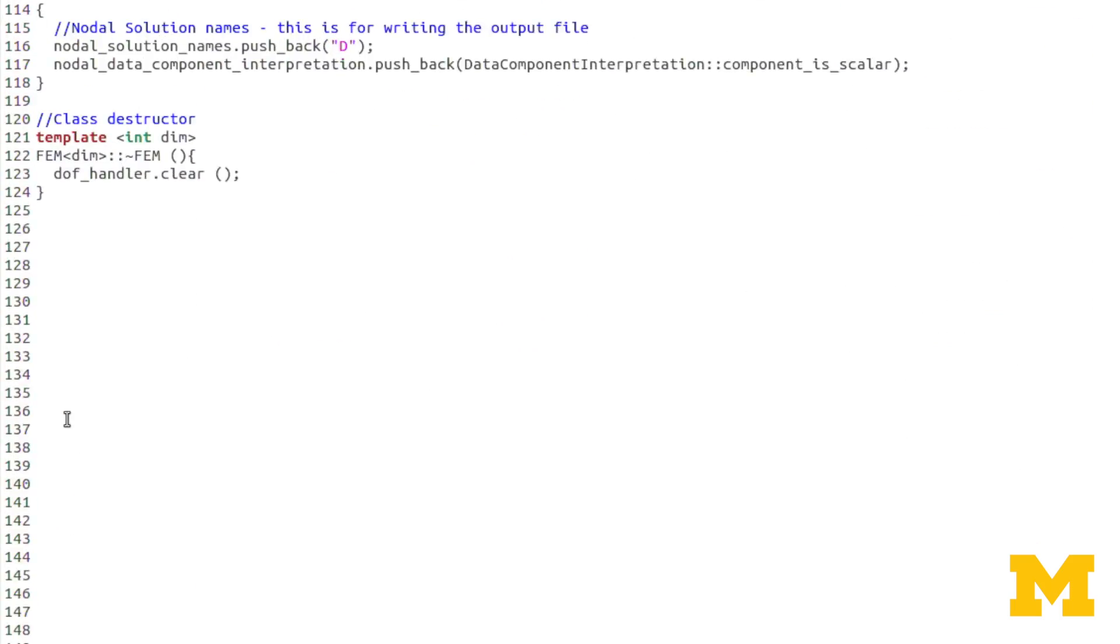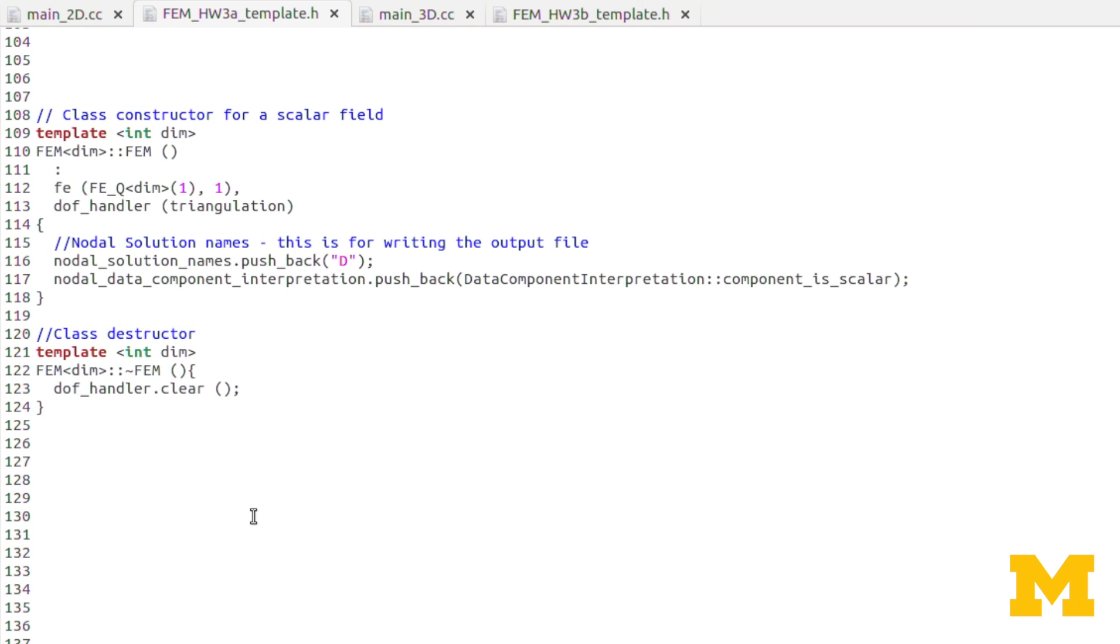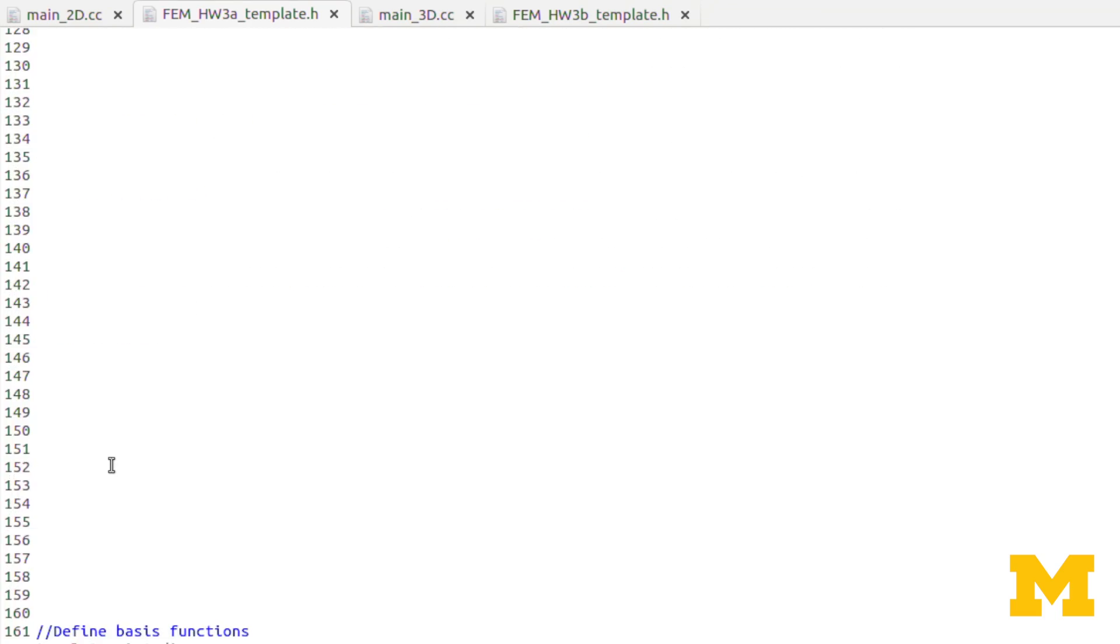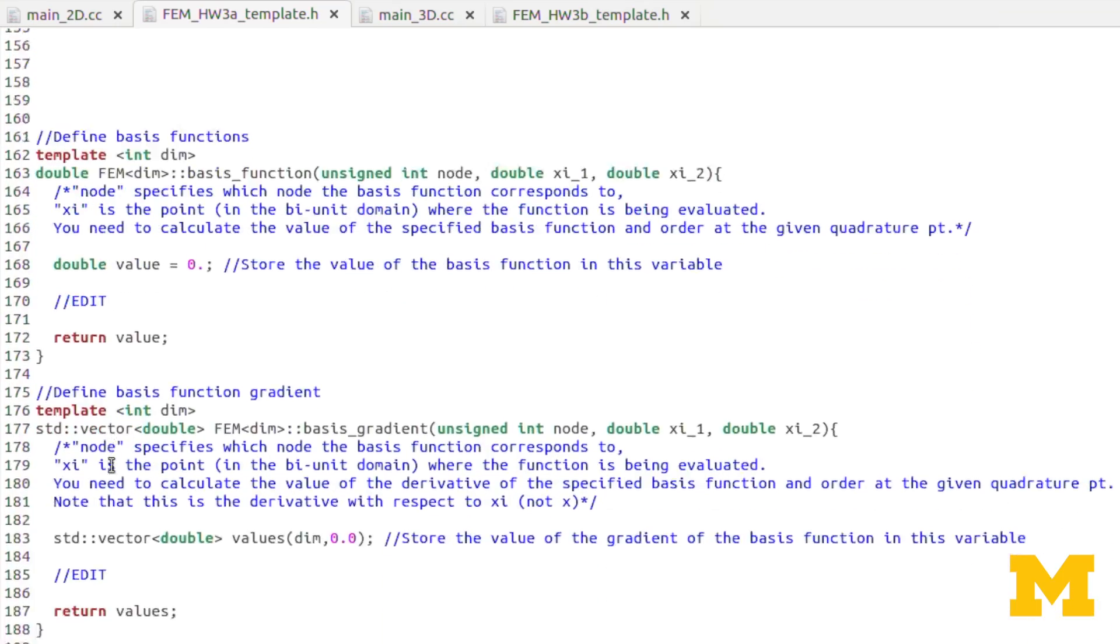So let's scroll down here to the constructor. We still have the same method of calling the constructor of our class variables, fv and dof handler, just as before, but since we don't have problem and order as an input, we don't need to worry about storing those. We have the same destructors before as well.